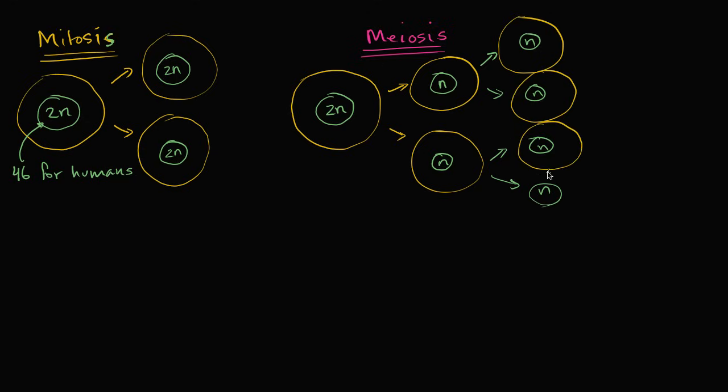And they all don't necessarily have the same genetic information anymore. Because as we go through this first phase of meiosis, meiosis I, you're essentially splitting the homologous pairs. And so this one might get some of the ones that you originally got from your father and some of the ones that you originally got from your mother. They split randomly, but each homologous pair gets split up.